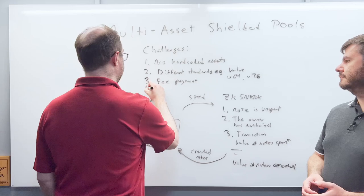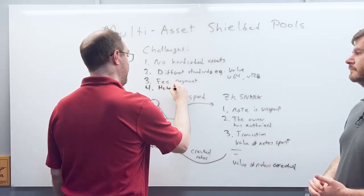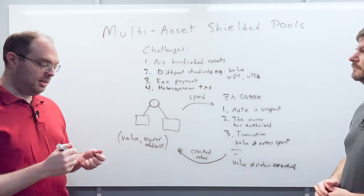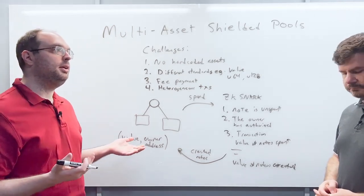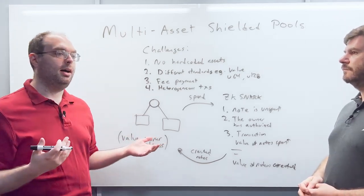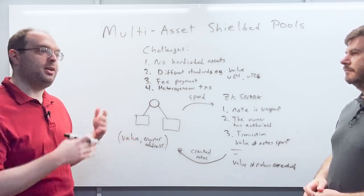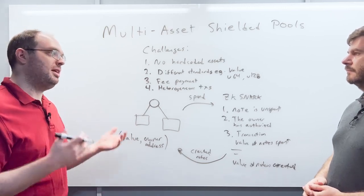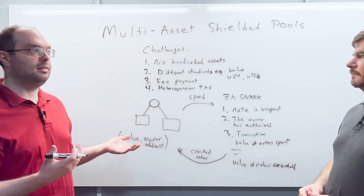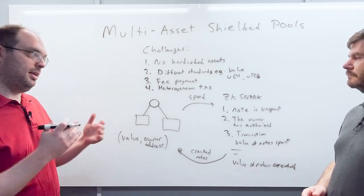The last challenge is heterogeneous transactions — within a single transaction, you may have multiple asset types. In a single-asset shielded pool this can't happen because every transfer is the same asset. But if multiple assets are allowed, you might have complex transactions where you're sending more than one asset type within a single transaction.